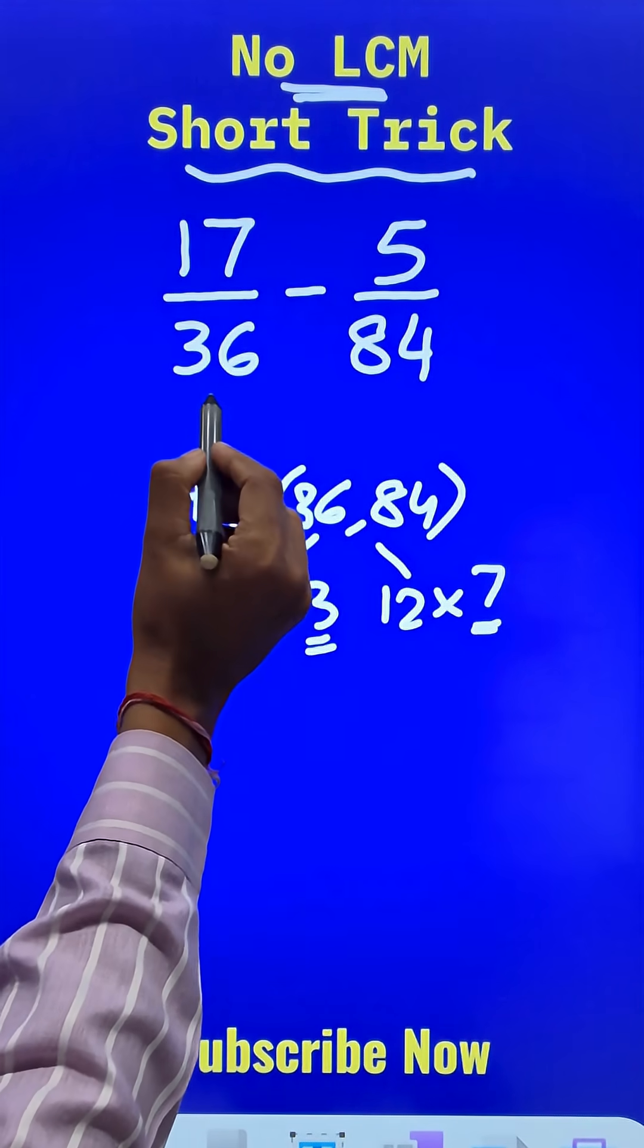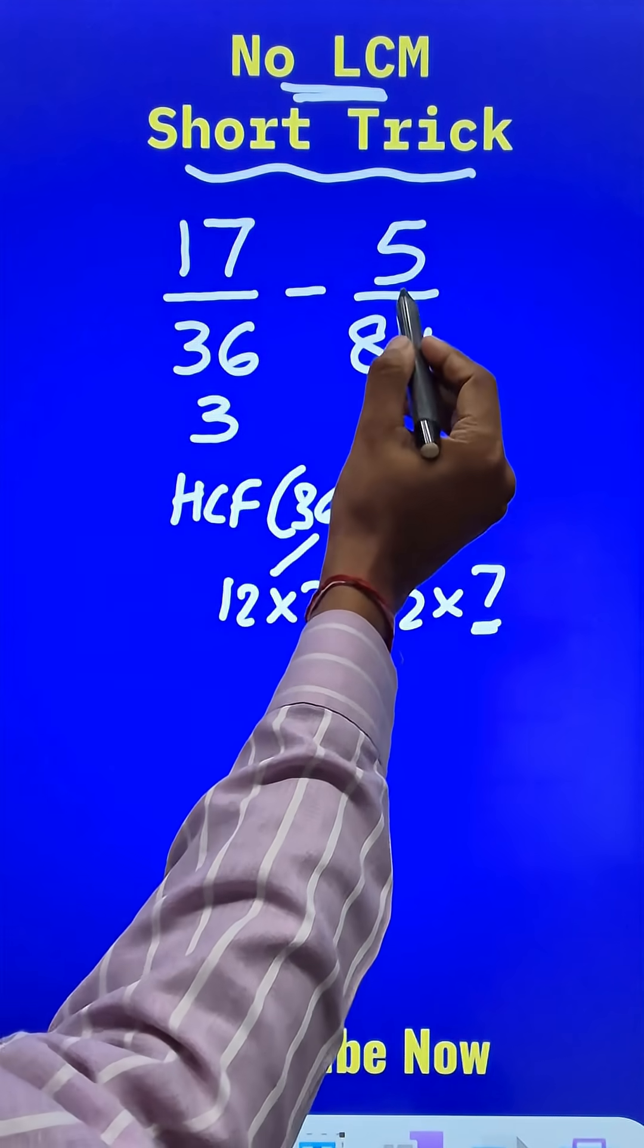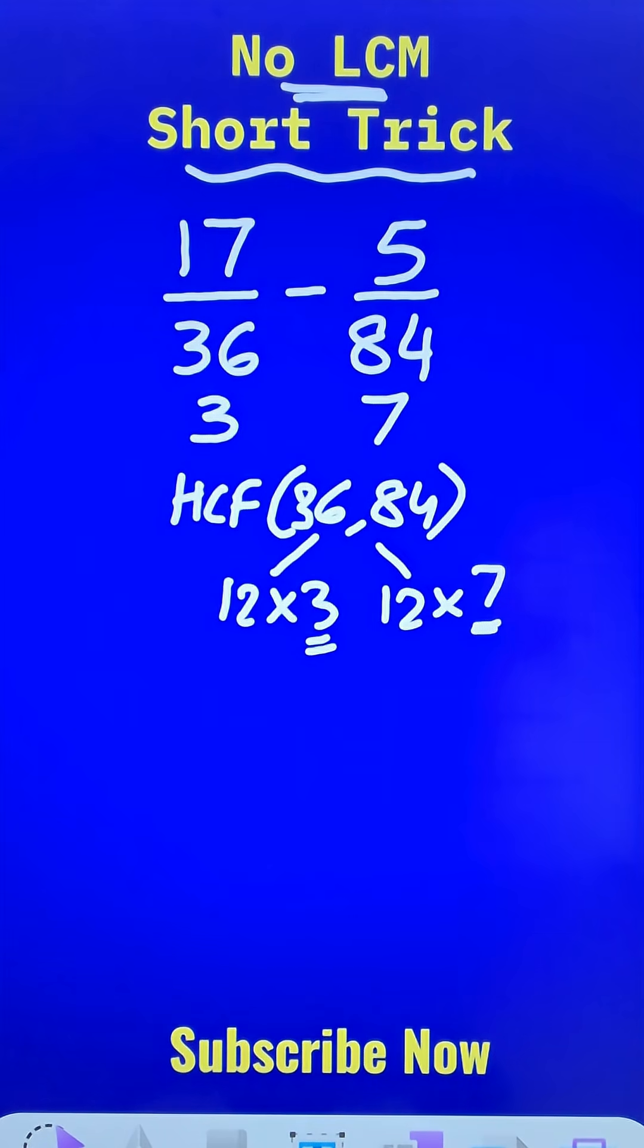So if you divide 36 by 12, you get 3 and if you divide 84 by 12, you get 7 and that's all I need to do.